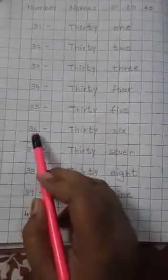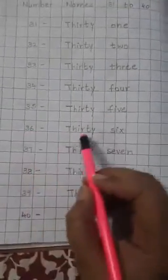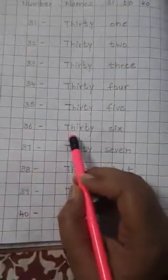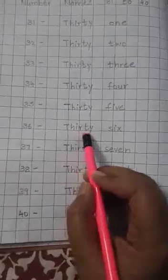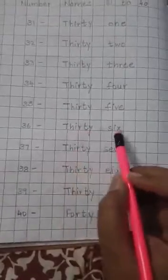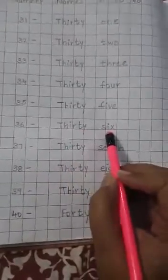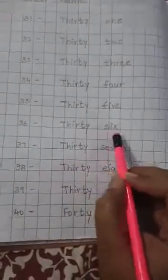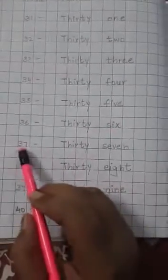36. 30 is T-H-I-R-T-Y, and 36 — SIX is S-I-X. Same way,